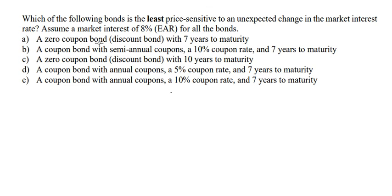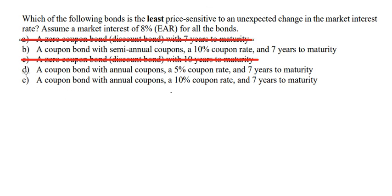Now let's go to the question. We see that we have seven years, seven years, ten years, seven years. So we see that ten years is the longest, but the question wants to find the least rate sensitive, so we need to ignore the ten-year bond. Now we go to coupon rate — we have zero, ten, five, ten. Because this is about the least sensitive, we need to select the highest coupon rate, so we cross out A and cross out D.